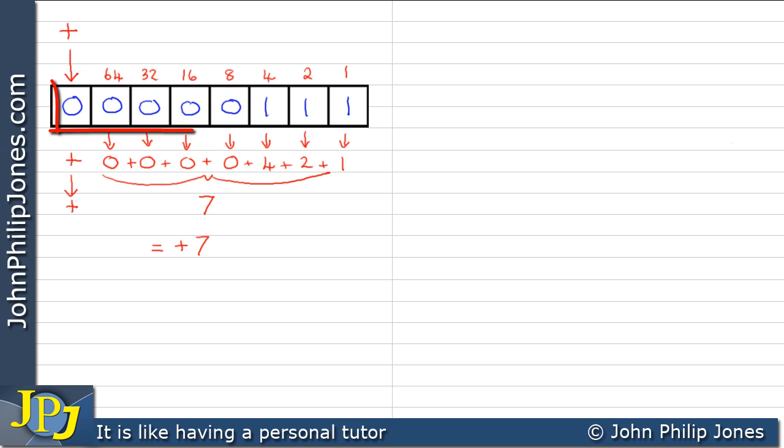And this is the positive sign. So we end up with plus 7. So this particular binary pattern here, when we're dealing with signed binary patterns, is plus 7.